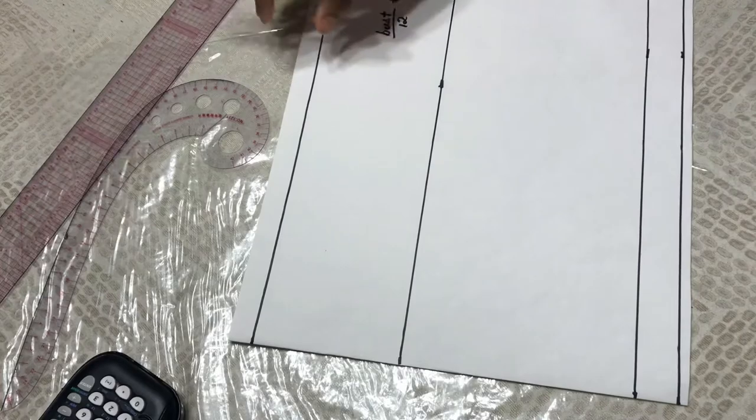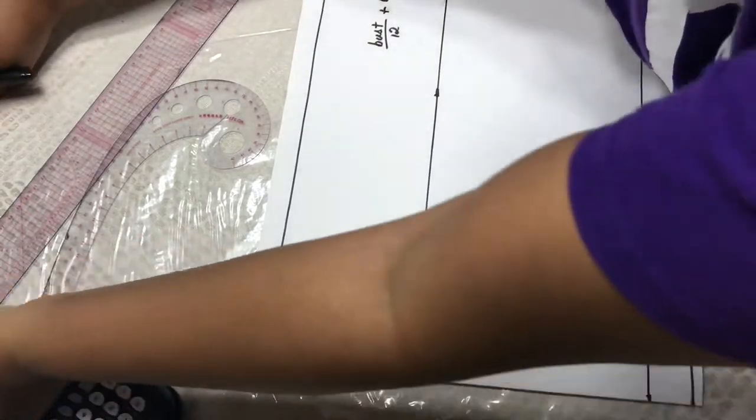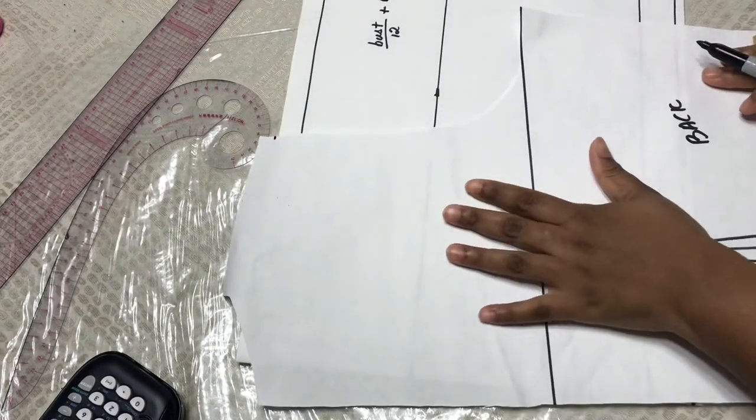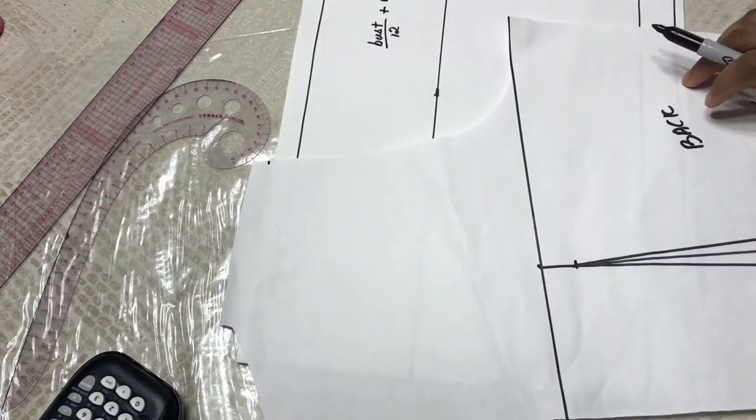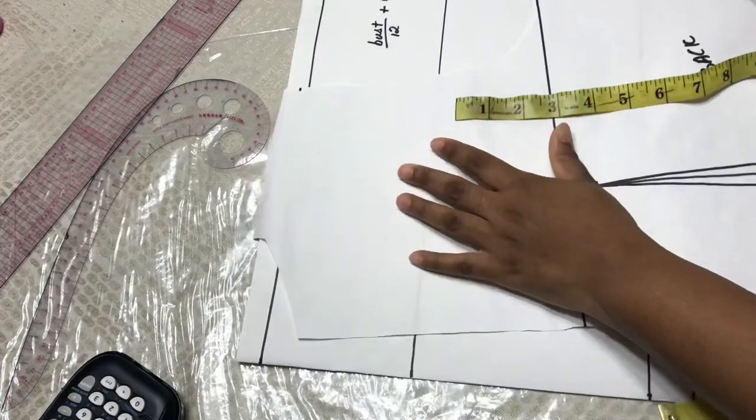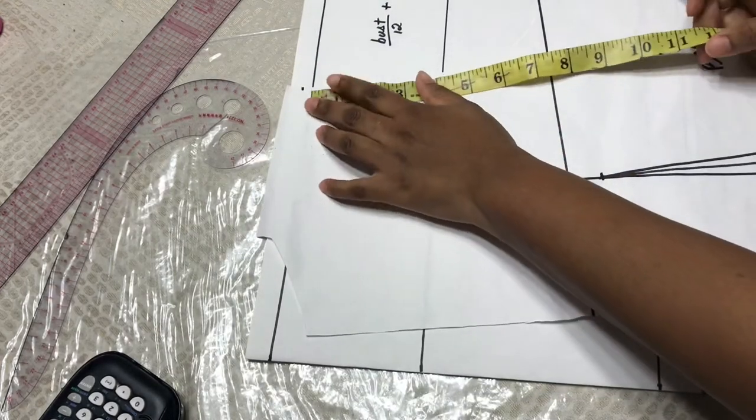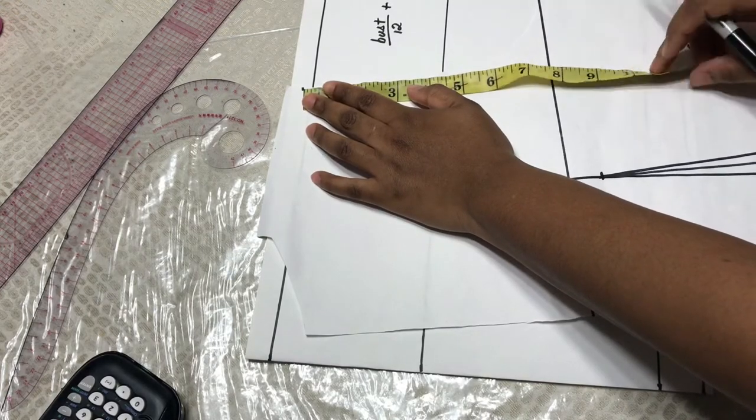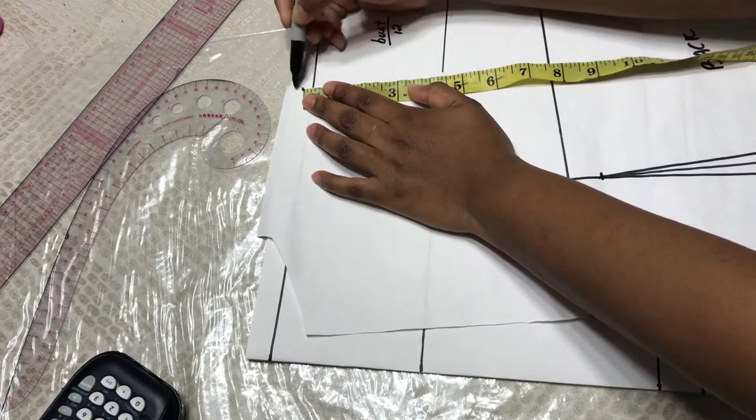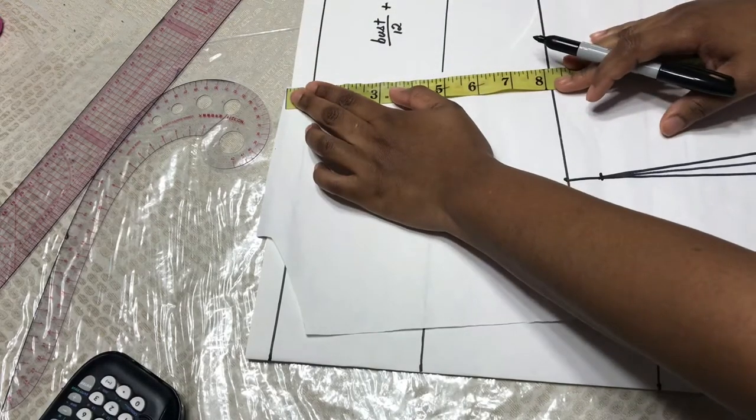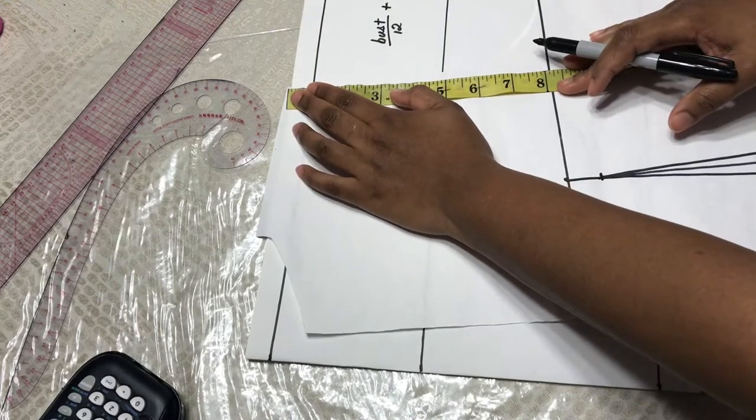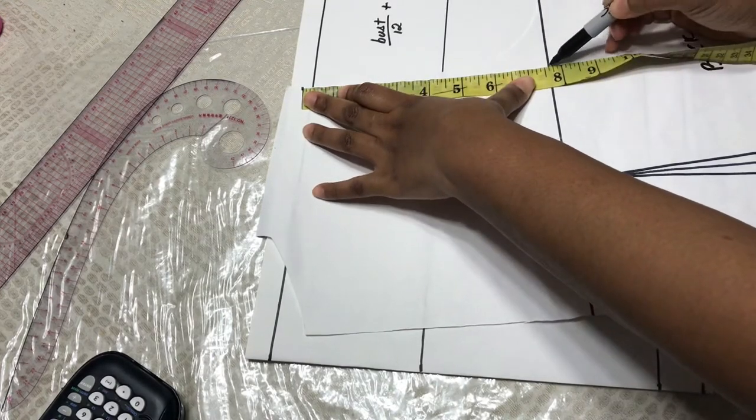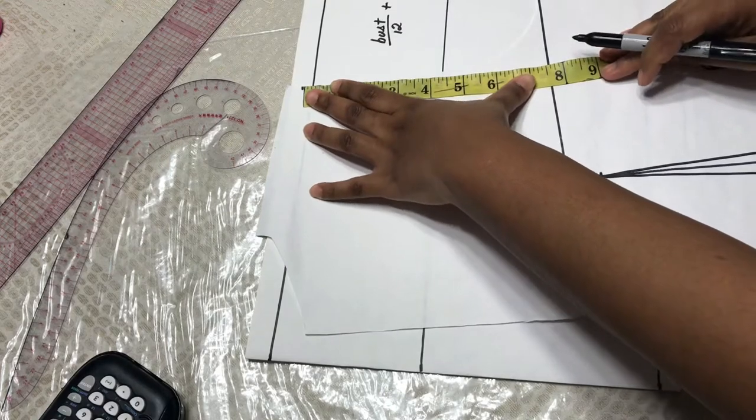In our last class, I showed you how to draft a basic bodice pattern, so you're going to grab that pattern and you're going to measure from your shoulder line. That's after you've done your seam allowance, your shoulder seam allowance, not from the tip of the shoulder where the allowance is, but after. You're going to measure from there to your chest line.